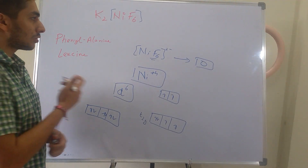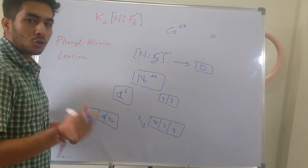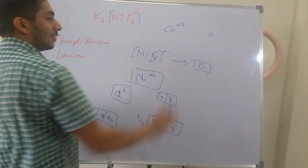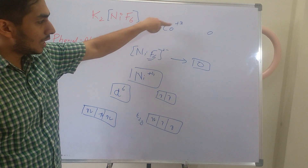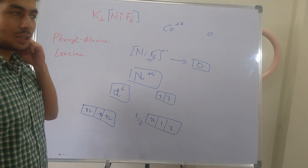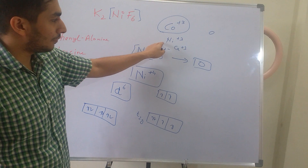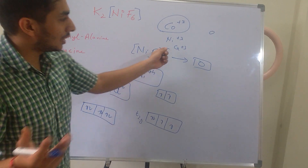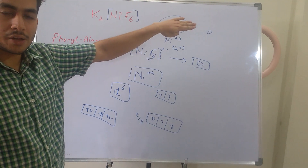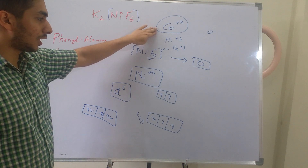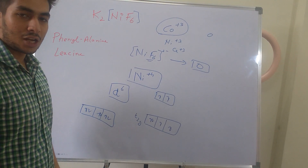One more important thing: cobalt in the +3 state, if it is forming a coordination compound with oxygen as a ligand, will always lead to pairing. This is only in case of cobalt +3. But if we take Ni³⁺ or Cr³⁺, oxygen will not lead to pairing for those metals. This is the only exception — cobalt +3 with oxygen as ligand will lead to pairing. And whenever any transition metal is in an oxidation state higher than +3, regardless of which ligand is attached, it will always lead to pairing.